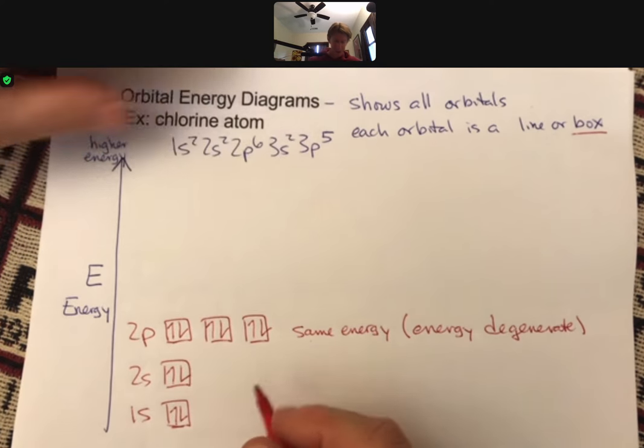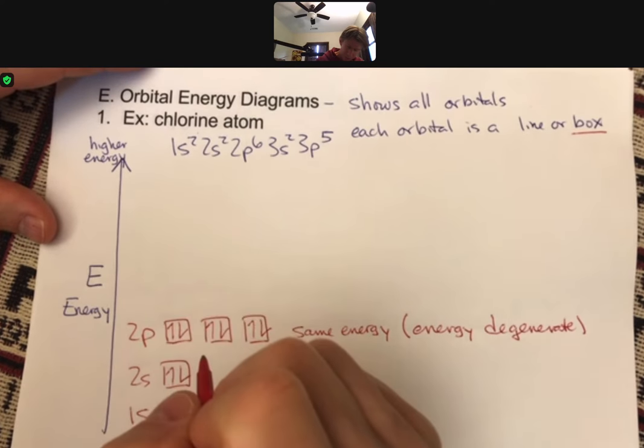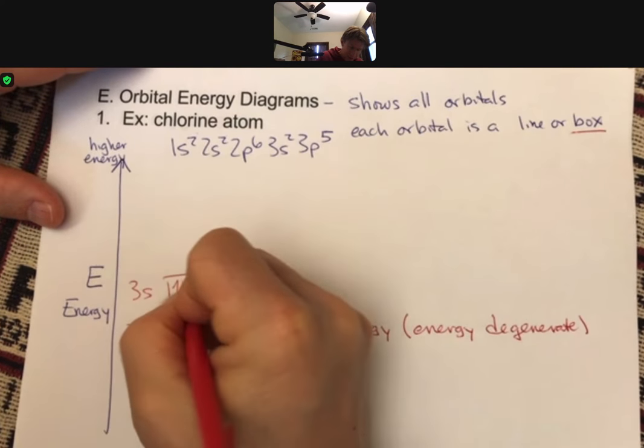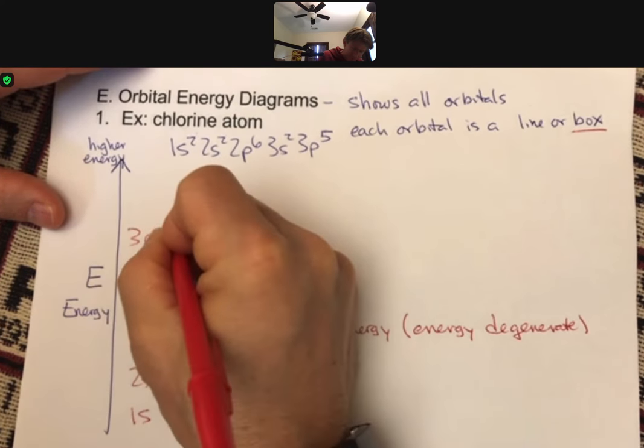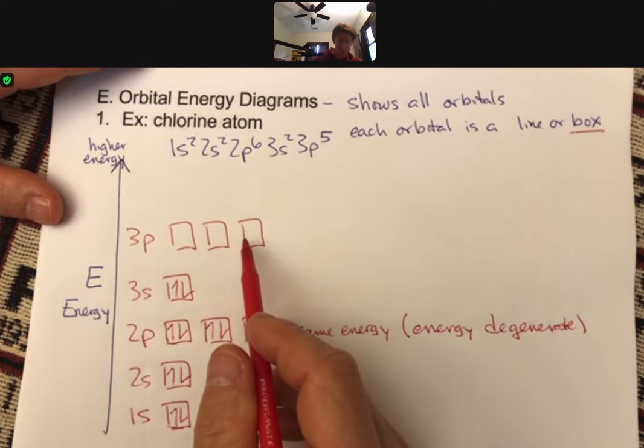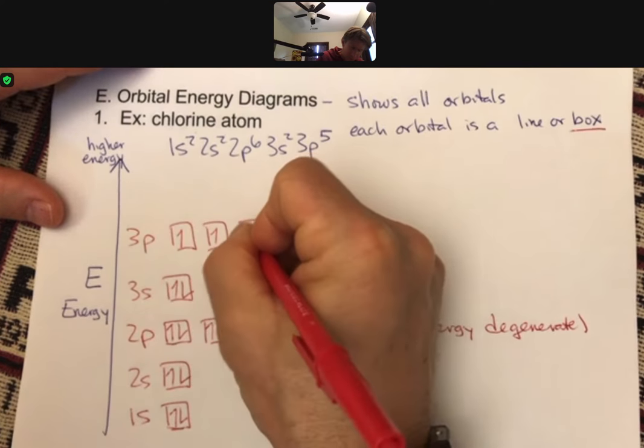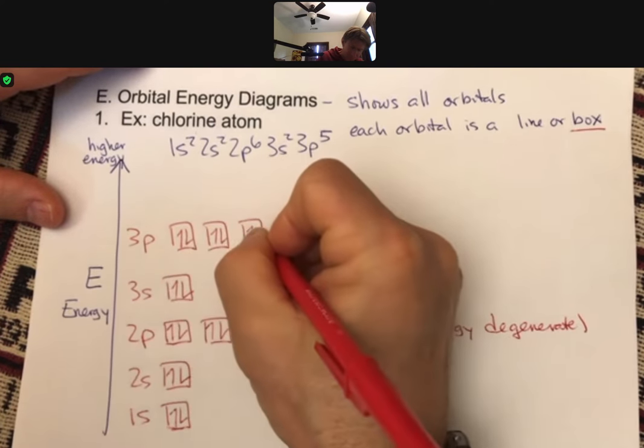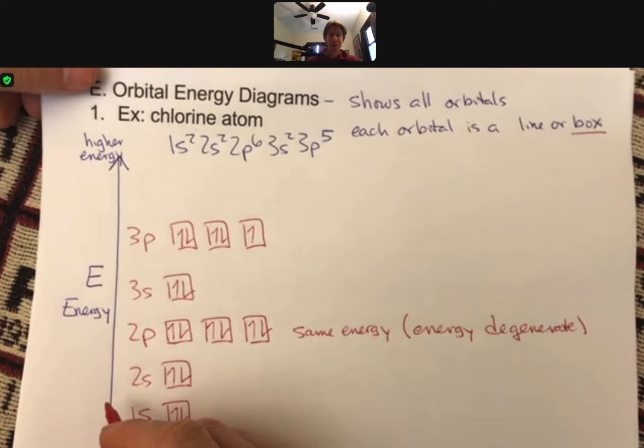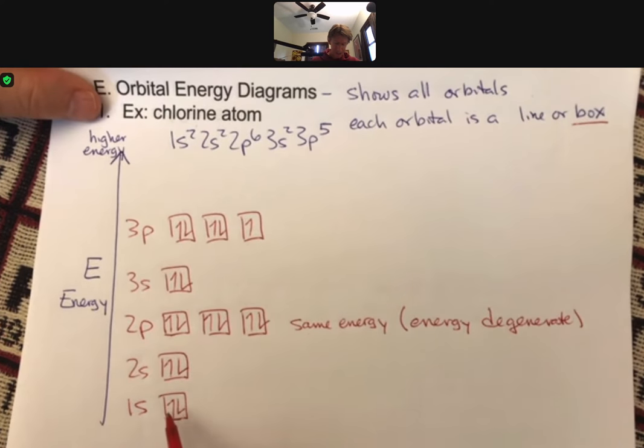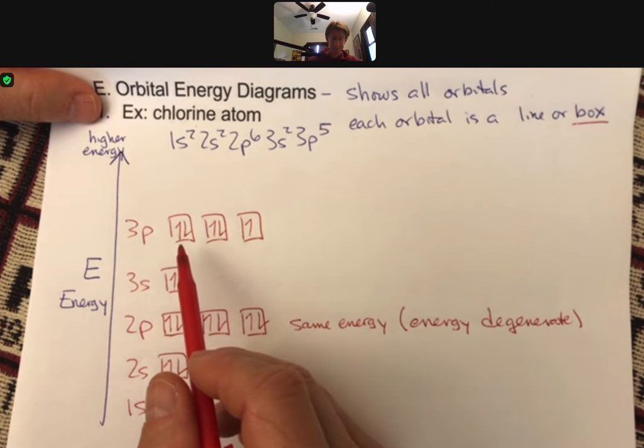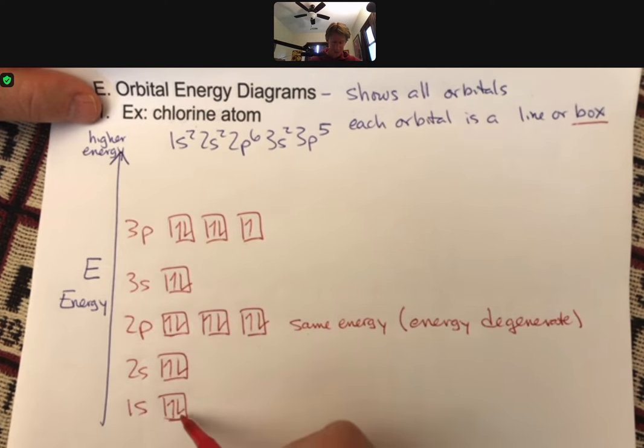But that'll come into play later on. So 3s, and then that has two electrons. And then 3p, again we have three same energy or identical energy p orbitals. We put in three, and we put in a total of five. And so this is the next layer of information. It says that the 3p electrons are the highest energy electrons in there. Electrons filled from lowest to highest energy.